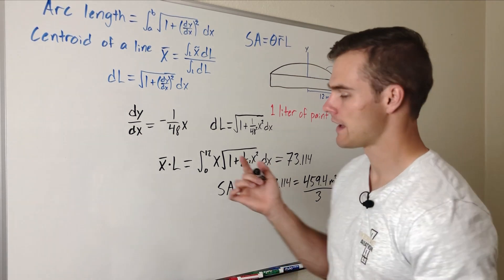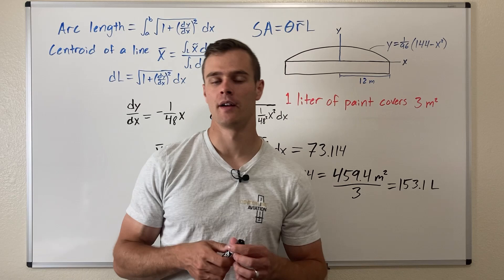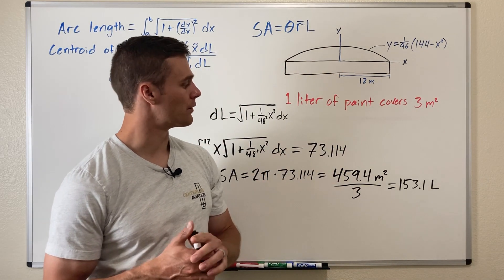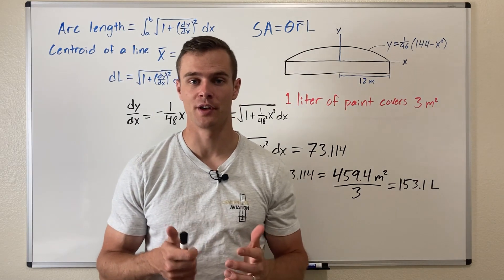So we need 153.1 liters of paint to be able to paint this entire roof. So there's a pretty good example problem.